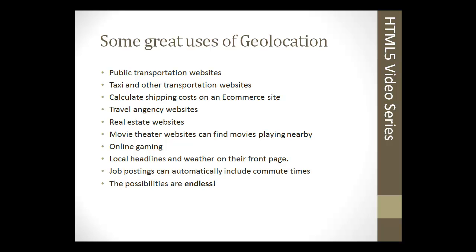What are some uses of geolocation? There are a lot of uses, but here are some popular and useful ones. Transportation websites — public transportation, buses, trains — can automatically detect where you are and give you schedules relative to your location. The same applies to taxis and other transportation websites. It's also used a lot for calculating shipping costs on shopping carts and e-commerce websites, as well as travel agencies and real estate websites for looking up listings and houses around your location.